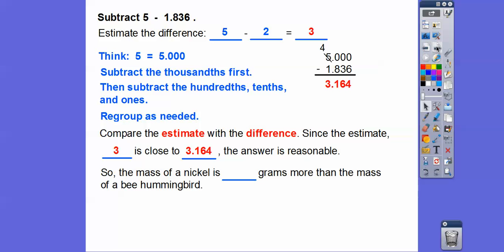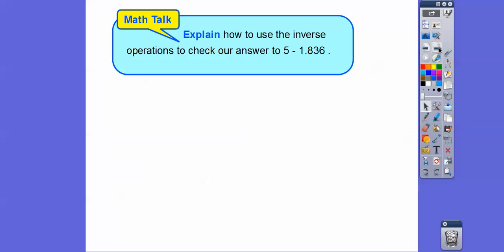Now, since our estimate is close to what we got, we can say our answer is reasonable. So the mass of a nickel is how many grams more than the mass of a hummingbird? 3.164 grams more.